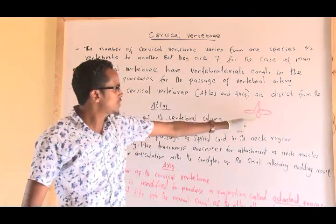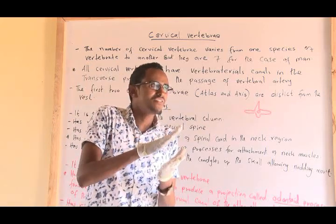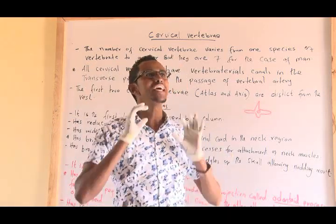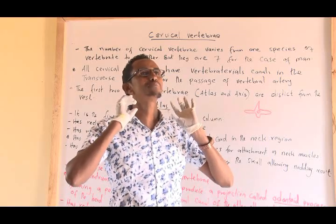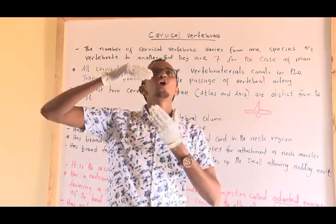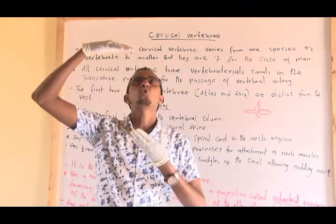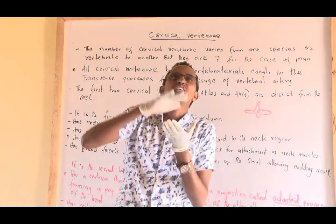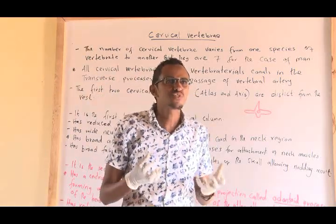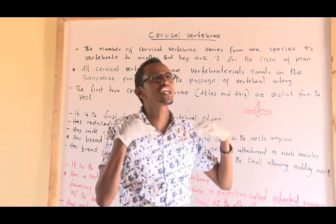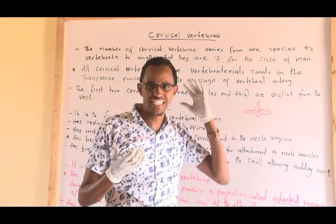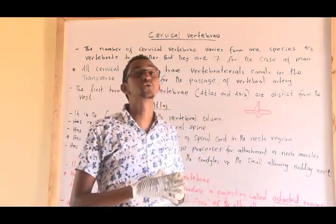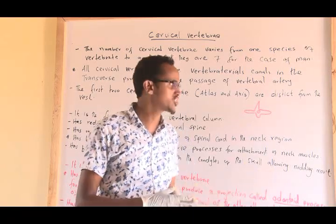The function of the centrum is to provide support. The atlas is the first bone, and therefore there are no other vertebrae sitting on top of it — there is not much weight to support. Therefore, the centrum is highly reduced because the support required is very small.